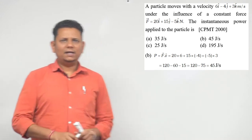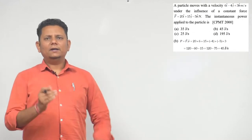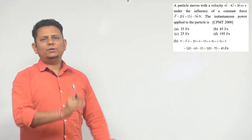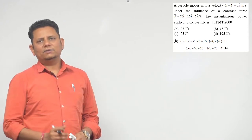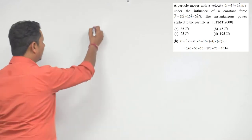This is a simple vector question. For this, you should know the vector formula: power is equal to F dot v, where F is force and v is instantaneous velocity. So let's write down the velocity that's given.